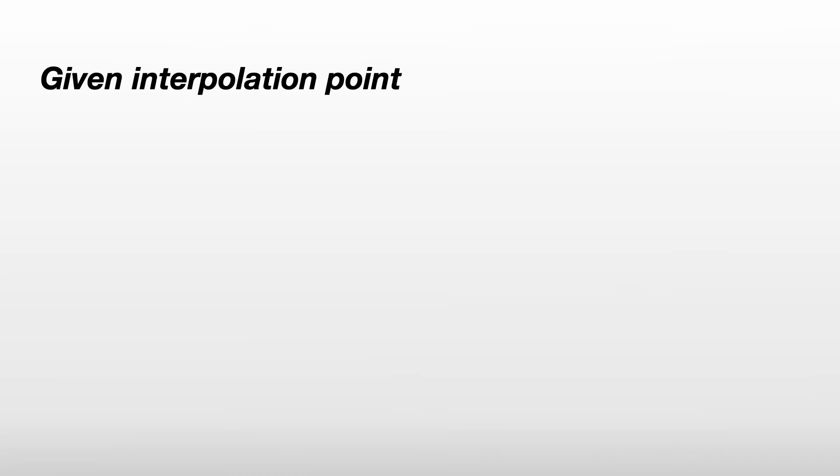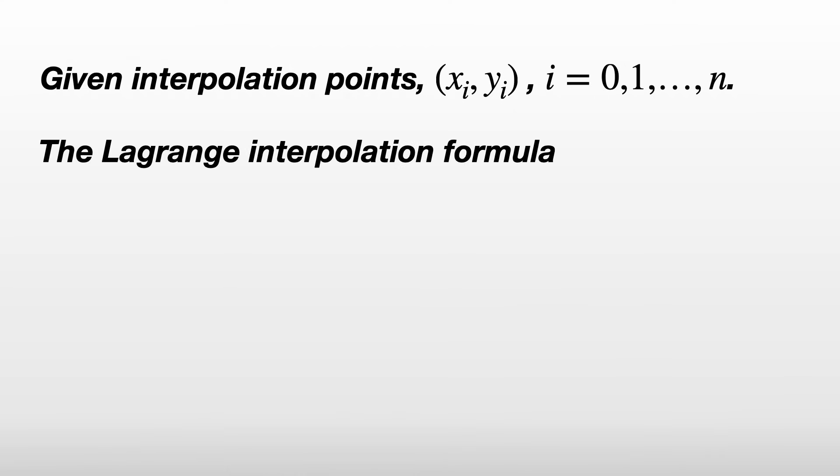Given interpolation points x_i and y_i from i equals 0 to n, the Lagrange interpolation formula tells us to calculate the Lagrange polynomials l_i, multiply each l_i by y_i, and then add them together as captured in this summation formula.